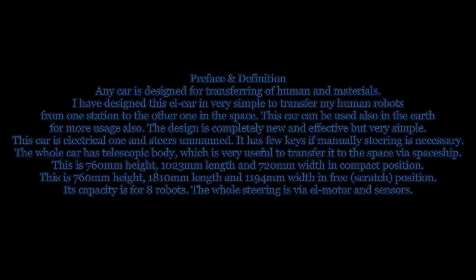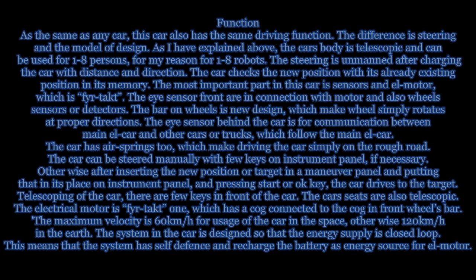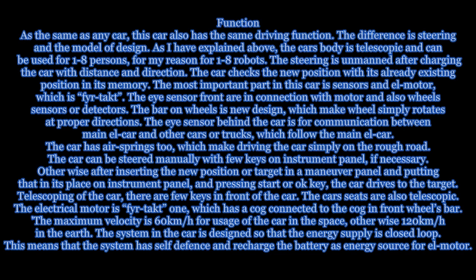As the same as any car, this car has the same driving function. The difference is the steering and the model of design. The car's body is telescopic and can be used for 1–8 persons, or in my case 1–8 robots. The steering is unmanned after charging the car with distance and direction. The car checks the new position with its already existing position in its memory. The most important part in this car is the sensors and L-Motor, which is fire-tacked.